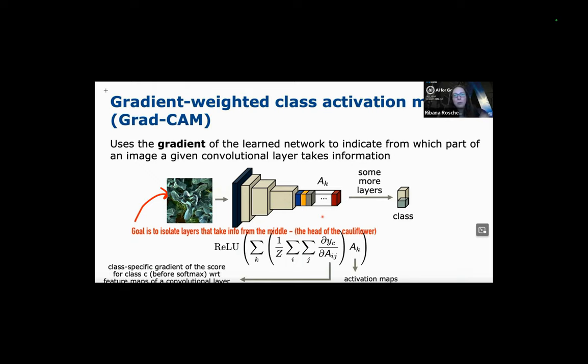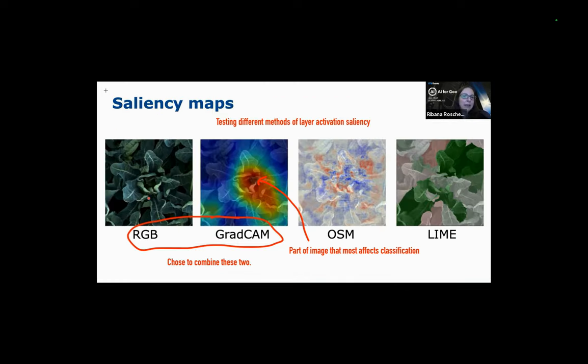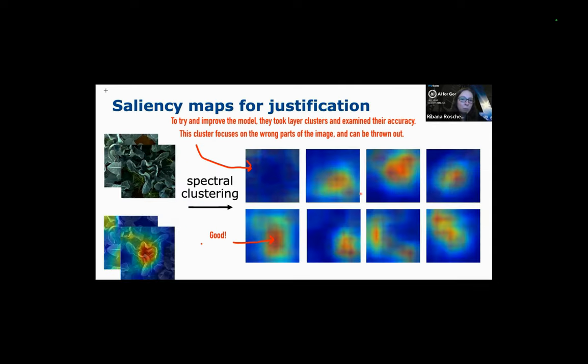Certain layers will activate on the corners of the image, some will activate on the center. The goal is to activate on the center because that is where the head of the cauliflower will be — that's the area of interest. They then construct saliency maps using various different methods of implementation, and what they decided to do is combine an RGB and GradCam implementation versus the other implementations. Then they took clusters of layers to see how accurately the network was performing.